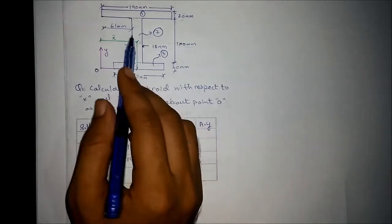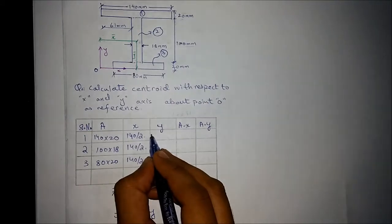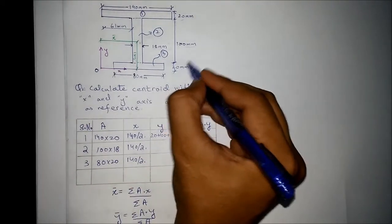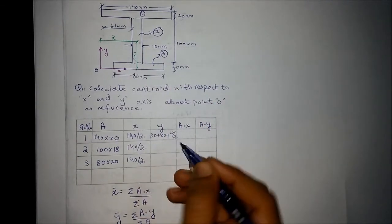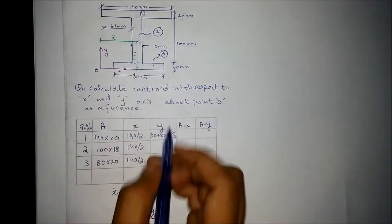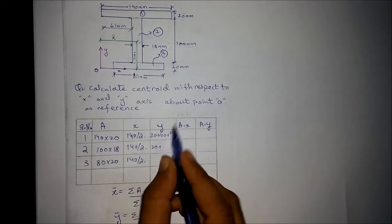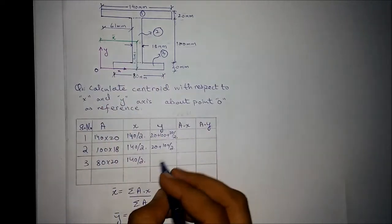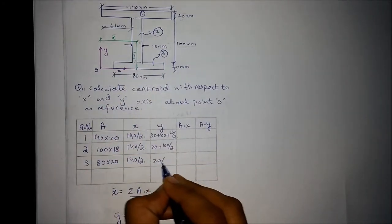For the y coordinate, we work vertically. For shape 1: (20 + 100 + 20 + 20 + 100 + 20) divided by 2. For shape 3, the y coordinate is 20 divided by 2.